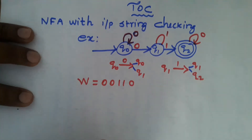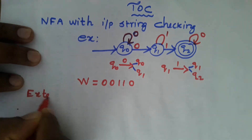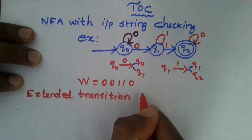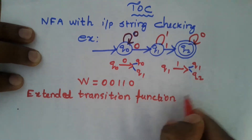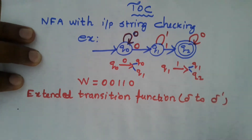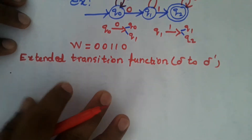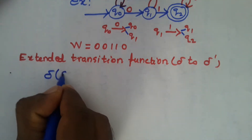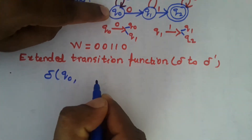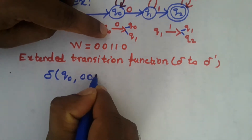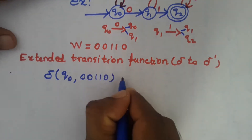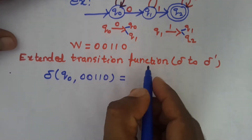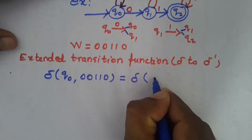For that, we have an extended transition function formula — the application of the extended transition function delta dash. So delta is extended to delta dash, and we apply this extended transition function for input checking. The initial state is Q0 and the given input string is 0, 0, 1, 1, 0, 0, 0, 1, 1, 0.